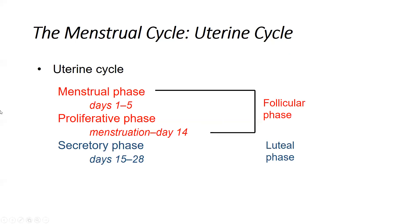The follicular and luteal phases correspond to different phases of the uterine cycle. The follicular phase corresponds to the menstrual phase — the shedding of the endometrium — and the proliferative phase, which is the proliferation of the endometrium. Days 1 to 5 and 6 to 14 correspond to the follicular phase; days 15 to 28 are the secretory phase, corresponding to the luteal phase of the ovarian cycle.